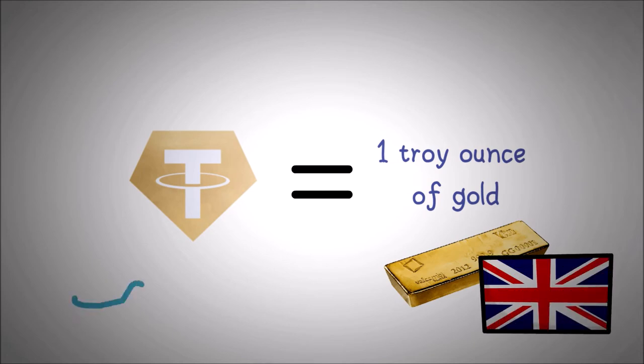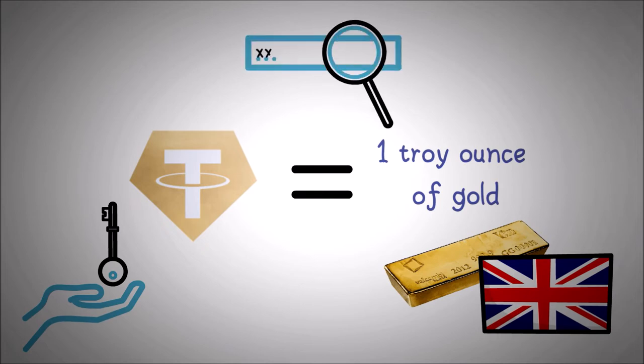The XAUT token holders have undivided ownership rights to gold on the specific gold bar. You can identify your gold bars with a unique serial number, weight, and purity.